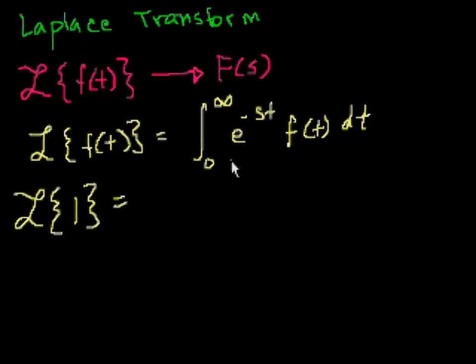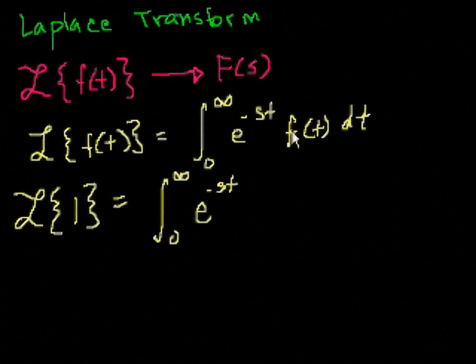and let me just substitute exactly the way I wrote it here. So that's the improper integral from 0 to infinity of e to the minus st times 1. Well, I don't have to rewrite it here, but there's a times 1, dt.